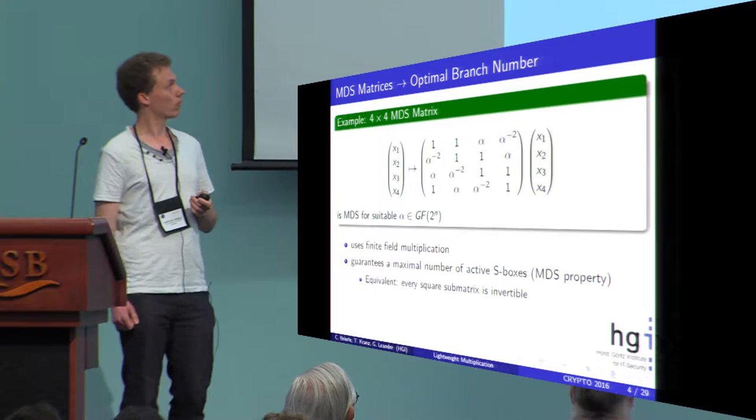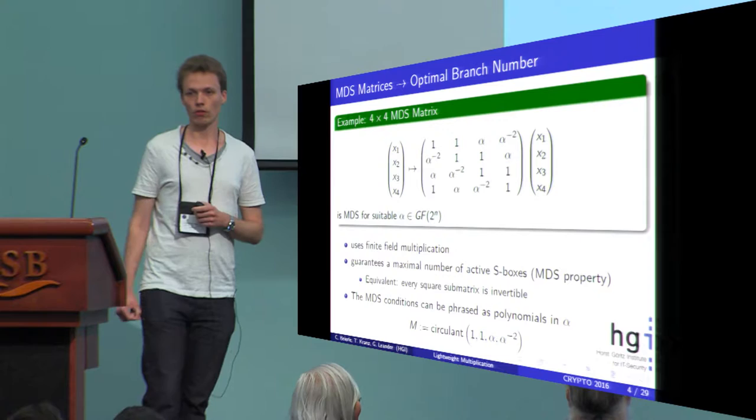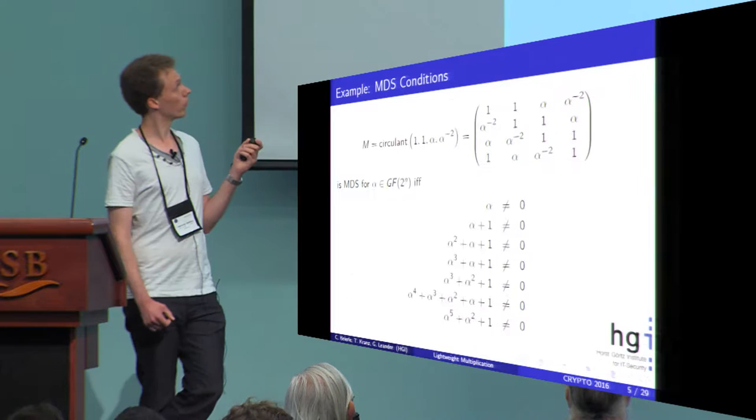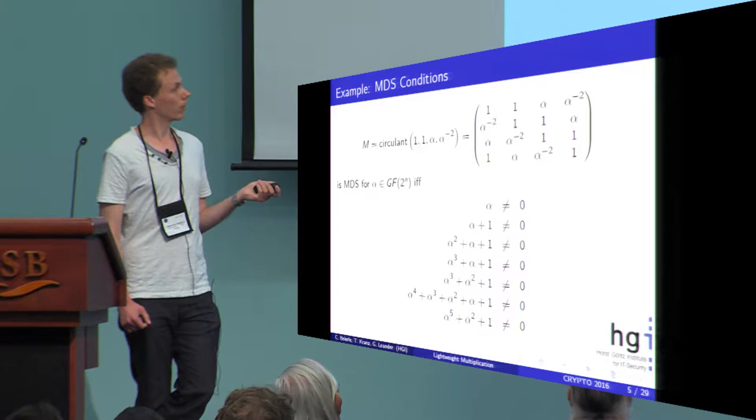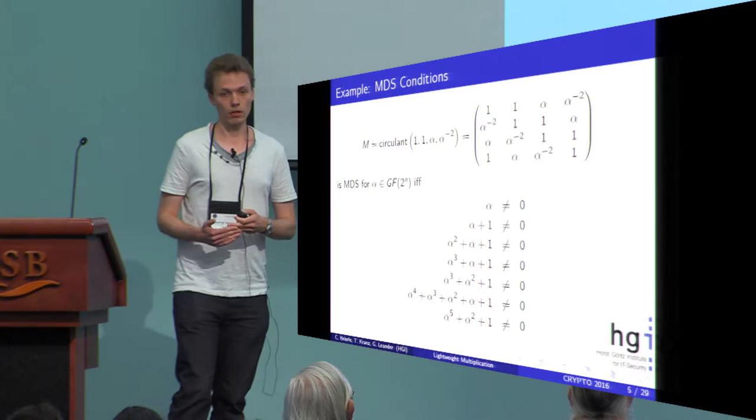The conditions on this property can be phrased as polynomials in alpha. All you have to do is compute the determinants of all these submatrices, and then you can see a list of equations, so a list of polynomials for which alpha should not be a root of these polynomials.